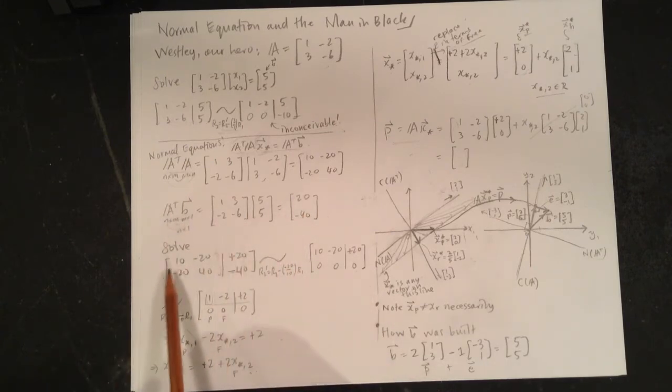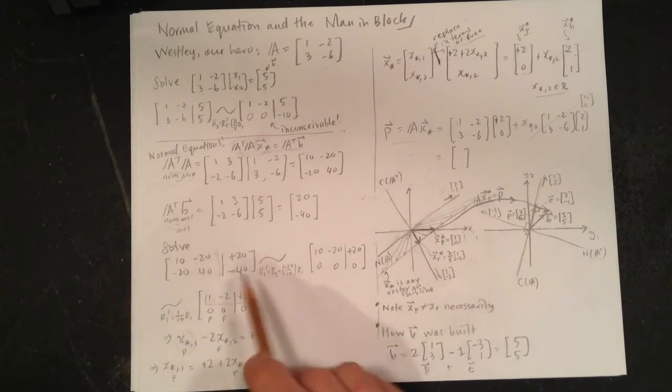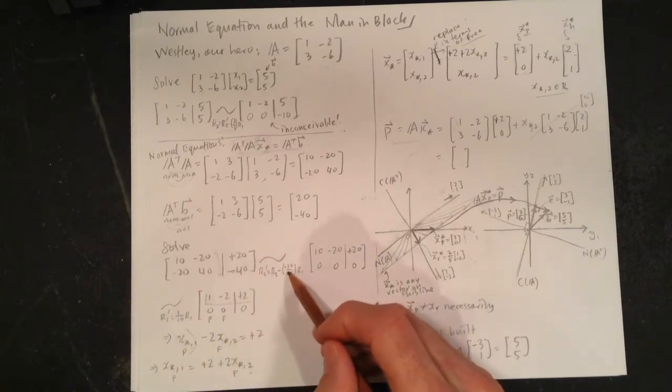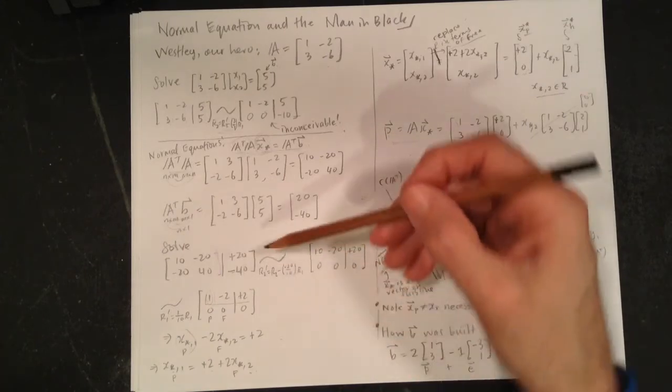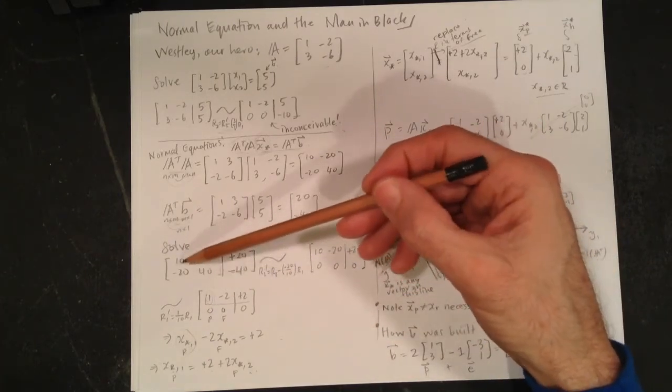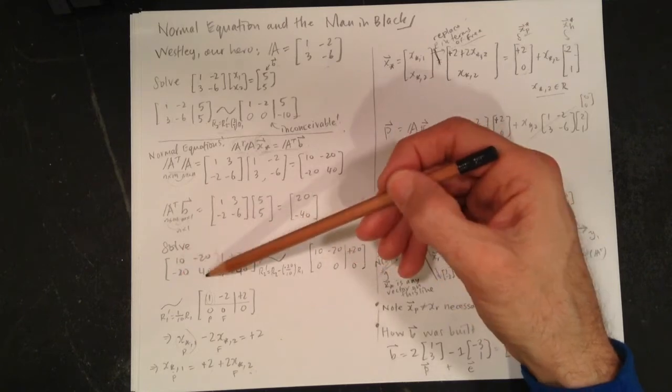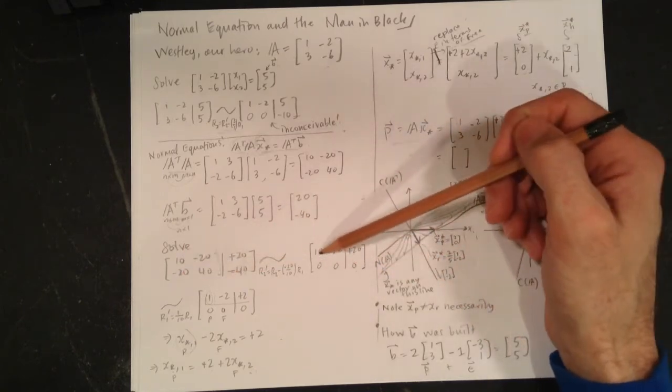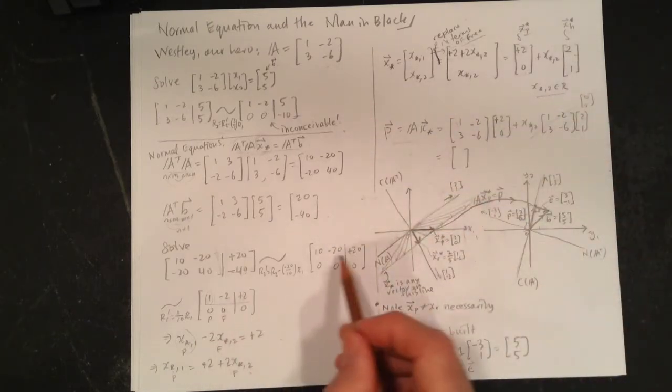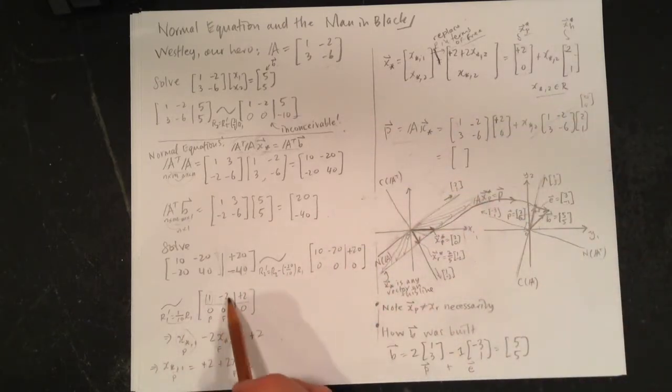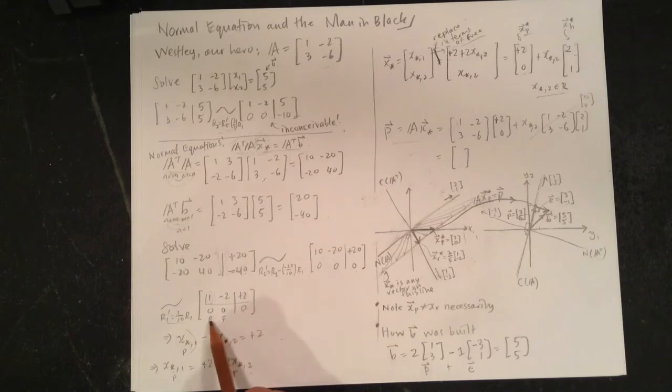Now we can solve this. Same thing, augmented matrix. There's a -20 divided by 10, so we're going to put that in there—[0, 0, 0] across the bottom. We're adding two of the first row to the second row essentially. So [0, 0, 0]—this is all good, 0 = 0, we're happy with that. We can solve this. We're going to divide through by 10 to get it to the full form: [1, -2, 2]—pivot, free, usual story.